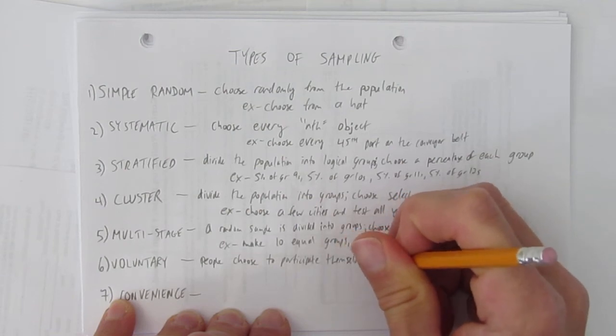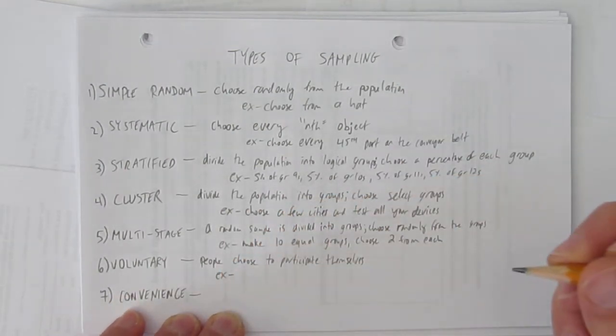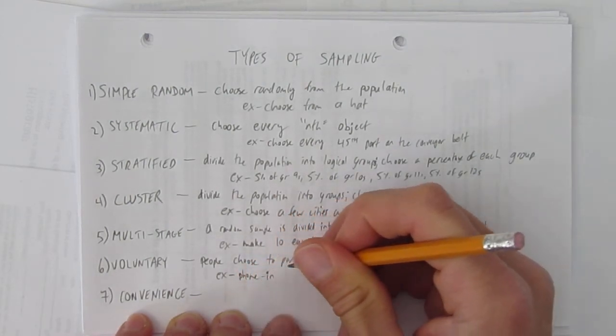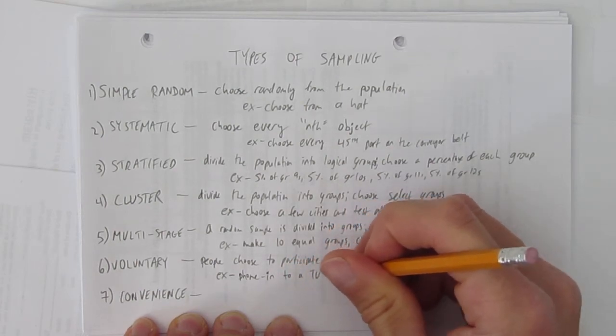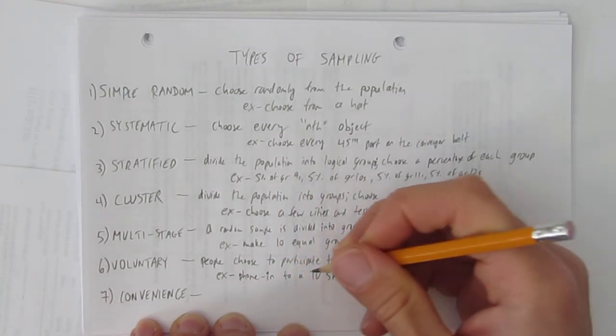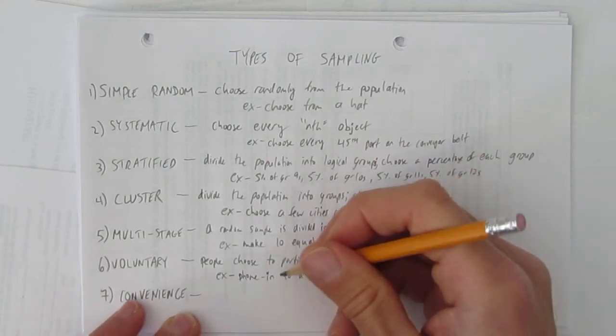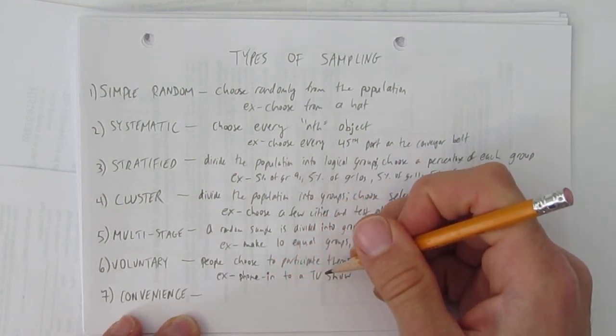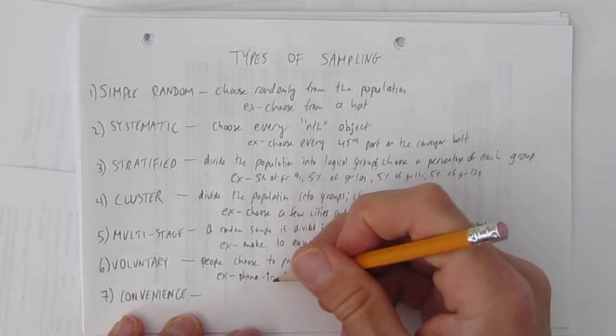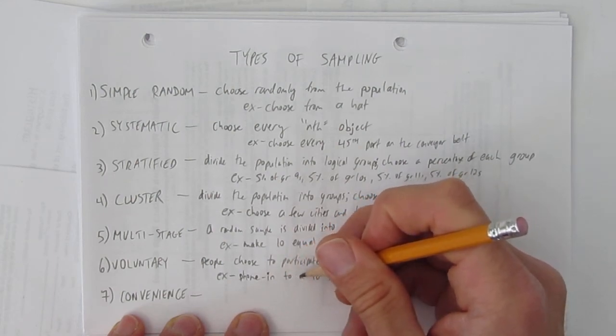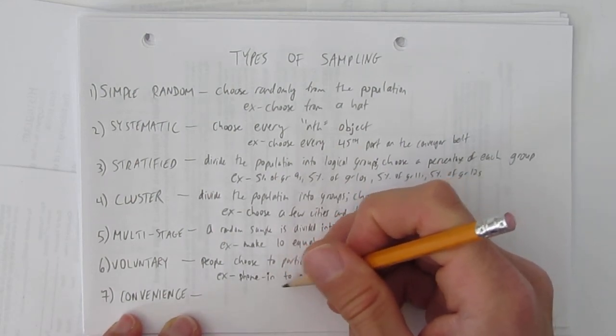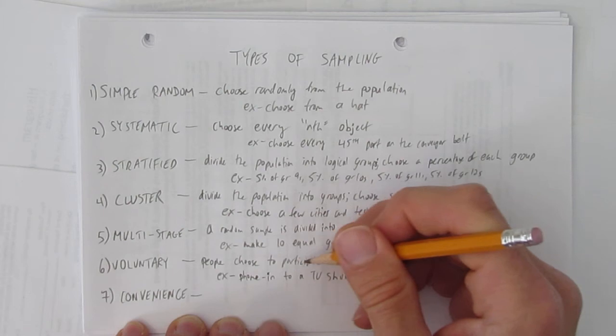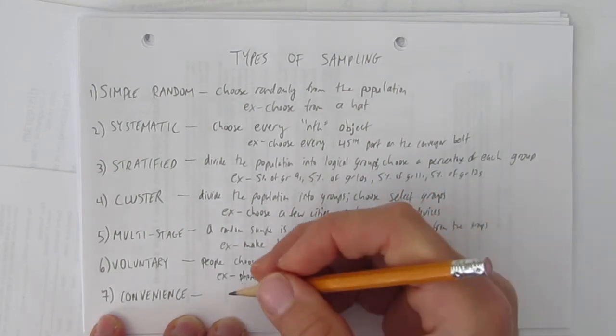And that's a problem because you get certain characteristics that are likely to appear more often than not. For example, when you phone into a TV show, who's more likely to be represented? Well, it's people who have time and people who are more confident, people who can afford the phone charge. You end up getting a biased sample because only certain types of people will phone in. And those types of people might not be the same percentages who call in that actually live in the population you're surveying. That's voluntary sample. When people choose to participate themselves, it ends up being biased.